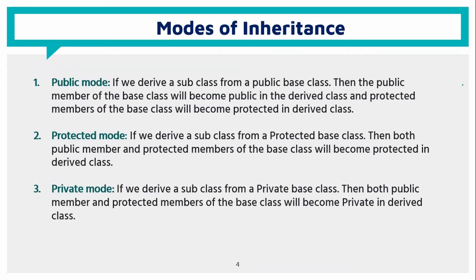The modes of inheritance are public, protected, and private. With a public base class, the public members remain public and protected members remain protected in the derived class. With a protected base class, both public and protected members become protected. With a private base class, both public and protected members become private.